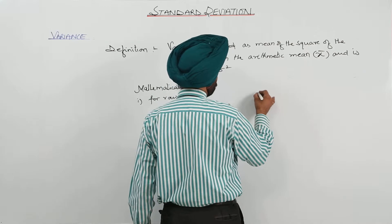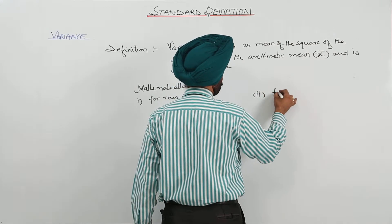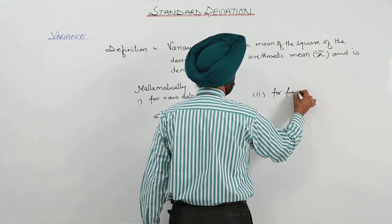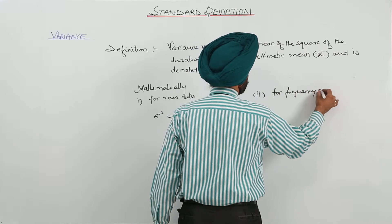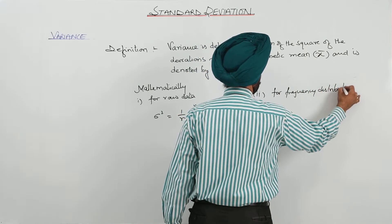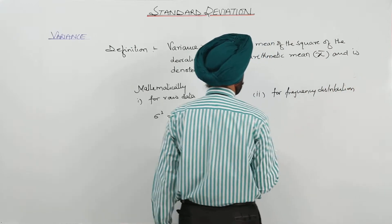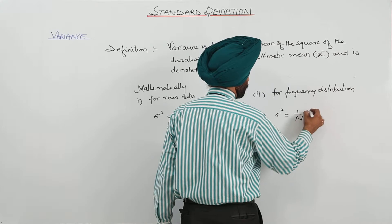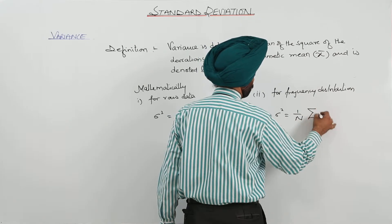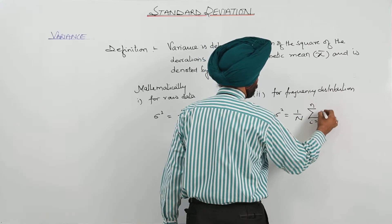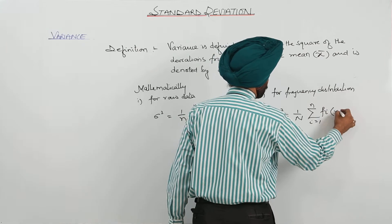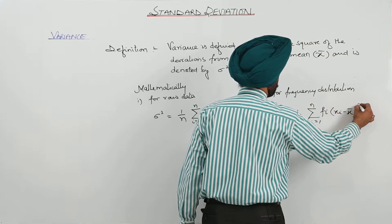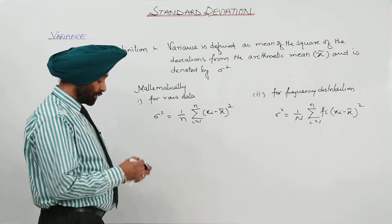And number two for frequency distribution, 1 upon capital N, summation for fi with xi minus x mean whole square. Is it clear?